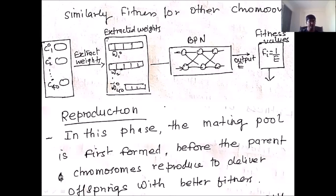Next is the reproduction phase. In this phase, the mating pool is first formed before parent chromosomes can reproduce to deliver offspring. Once chromosomes are generated and fitness evaluated, they go into the reproduction phase to produce newer, better solutions. The rest of the process will be covered in the next lecture. Thank you.